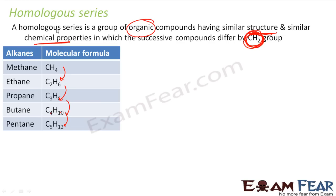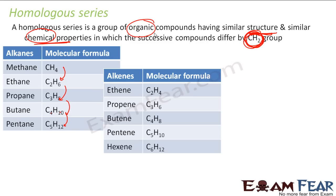The reason we study this is because they have similar chemical properties and similar structure. More examples: for alkenes, if you take C2H4 (ethene), propene, butene, pentene, hexene — all these have similar chemical properties. You can see here also they differ by CH2.